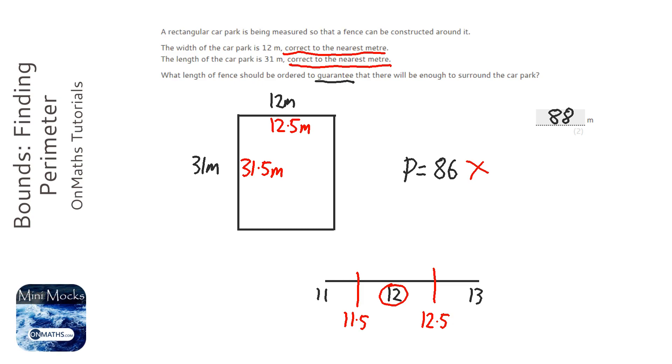Now a couple of things to state. Obviously what you could do is just add these two numbers together and times by 2. That's a much quicker way of doing perimeter.